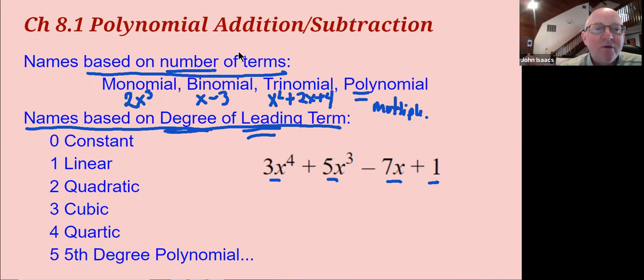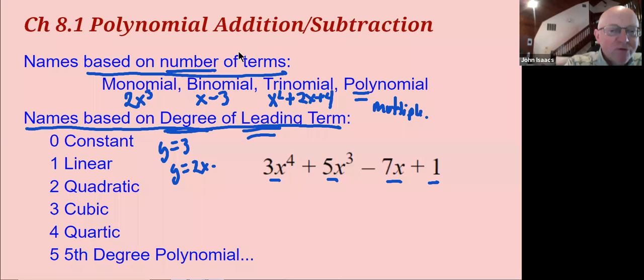So if a statement is like y equals 3, that's a constant because y always equals 3. It's not actually even a polynomial. This is y equals 3. A linear would be like y equals 2x. Even if it had plus 3 on it, it's still linear.